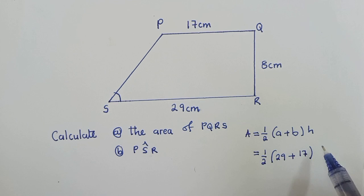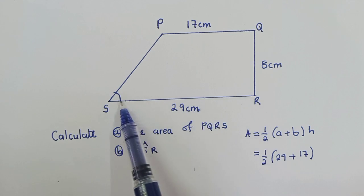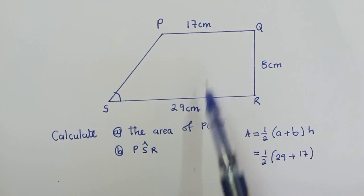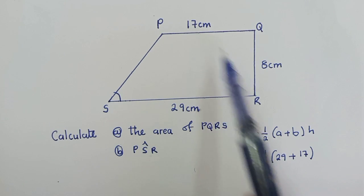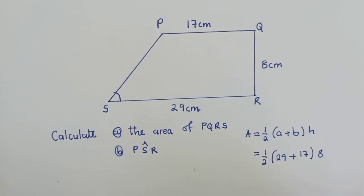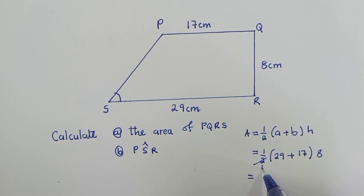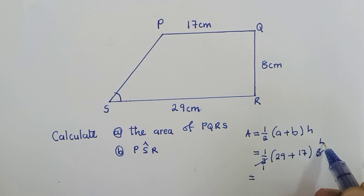Our H will be the length or the height between the two parallel lines, between this and this. So what is the distance from here to here? It's right here. It's 8 centimeters. Then we do our calculations. 2 into 2 is 1, in 2, 8 is 4.